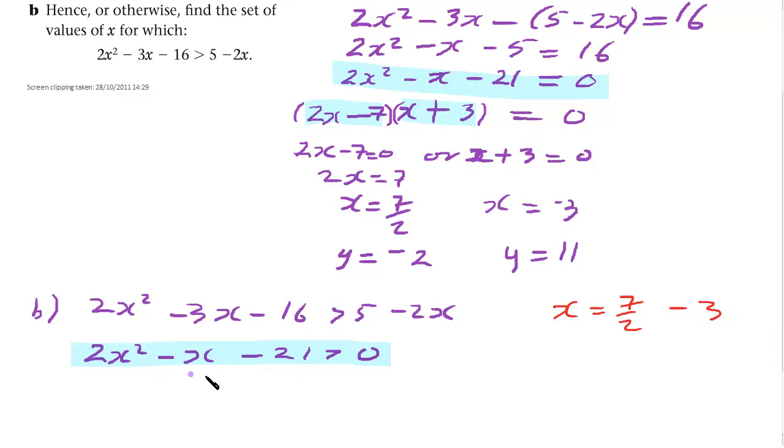If I have to draw the graph of y equals this expression here, the bit I'm just underlining, if I have y equals that, then I get this sort of graph. I'm going to have it crossing at minus 3 and at 7 over 2. So it's just over 3. So I'm going to have it crossing at minus 3 and crossing at 7 over 2. And the graph will do this.